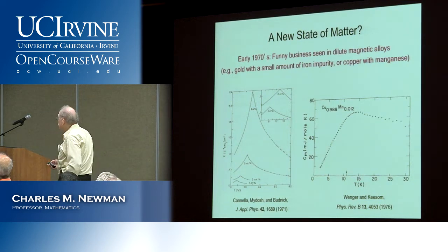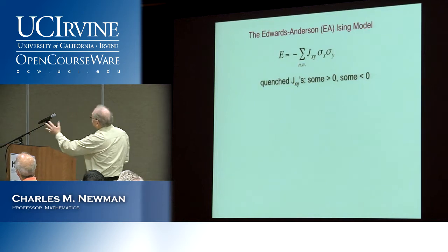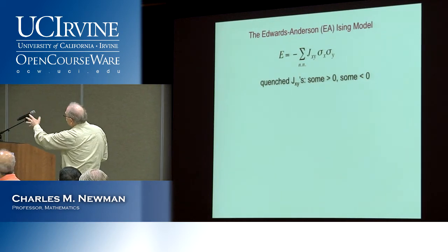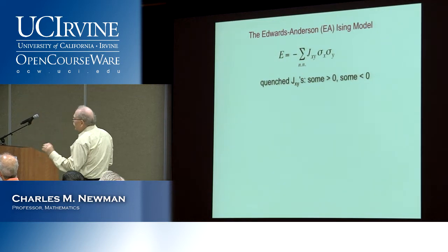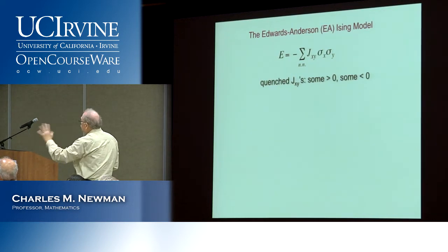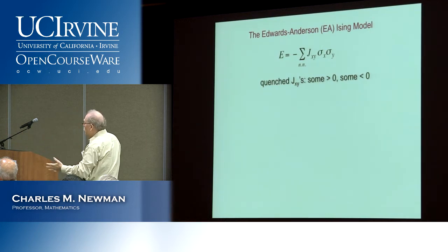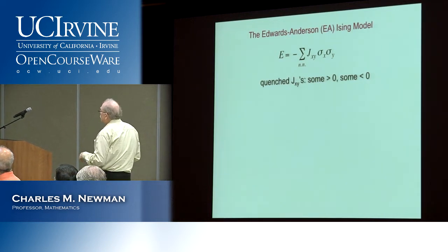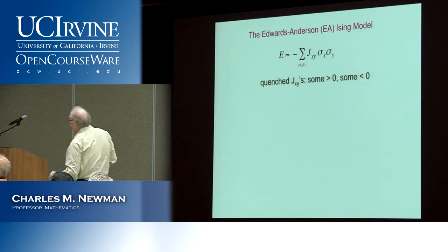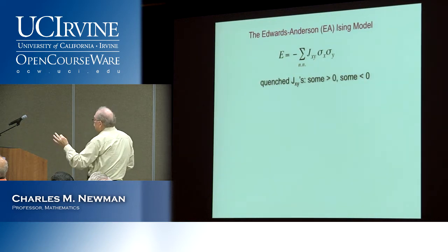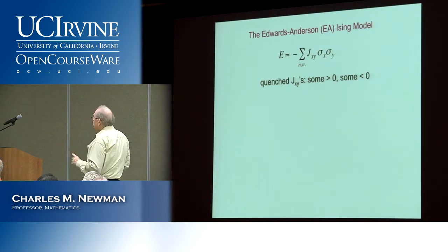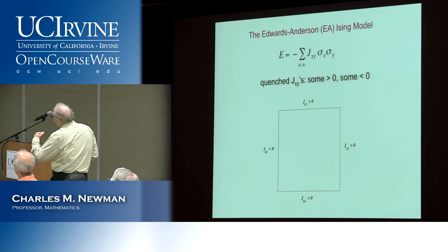Here's the mathematical model for a metallic alloy spin glass. It's extremely simple — a formula for the energy. The variables, the sigma x and y, take two values representing arrows pointing up or pointing down, plus or minus one. The coefficients — the coupling constants — are randomly generated, representing the quenched disorder of the system. Some are positive, some negative. A positive coefficient means neighboring spins want to point in the same direction at low energy; a negative coefficient means they want to point in opposite directions.